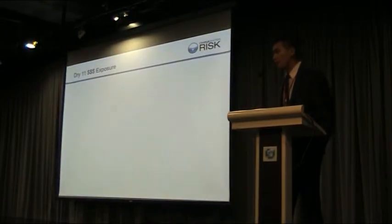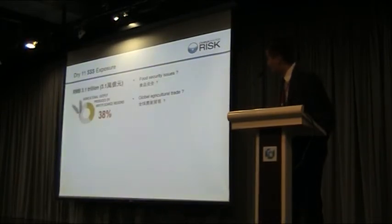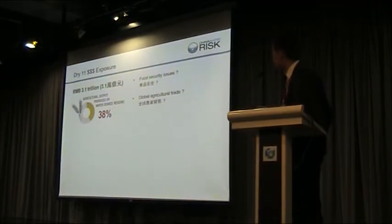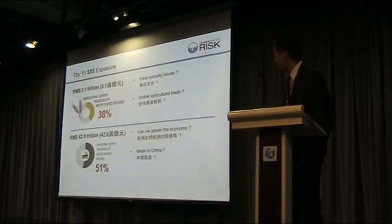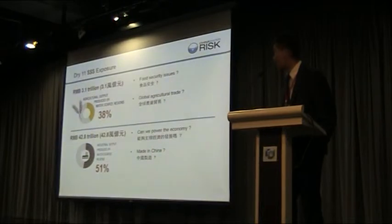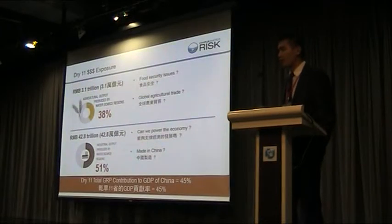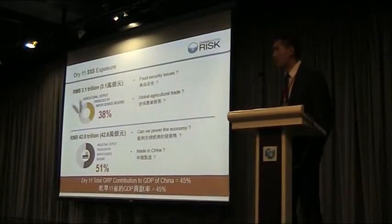How much impact will this scarcity and pollution have on our economy? The Dry 11 provinces represent 38% of China's agricultural production, so any water crisis there will have impact on food security in China and, because China is such a big agricultural producer, on global agricultural trade as well. These provinces also represent 51% of industrial output, raising the question of whether we can power this economy with such limited water resources and still produce cheap products for the rest of the world. In total, the Dry 11 represent 45% of China's GDP, so any water crisis there will have great impact not only regionally but also globally.